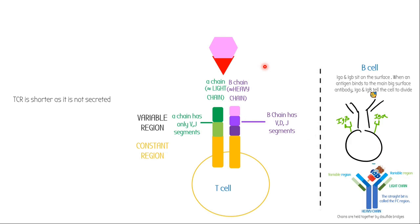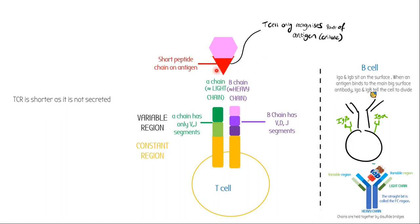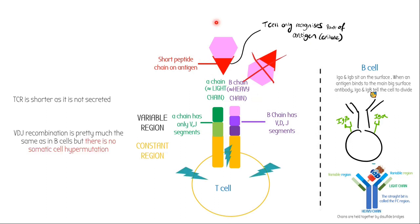Because the T-cell receptor is so specific, it won't recognize the whole antigen — it will only recognize short peptide sequences on the antigen, and those are known as epitopes. So for example, if a whole antigen comes along in a different configuration, the T-cell will not be able to recognize it; it can only recognize a specific portion of the antigen. In terms of VDJ recombination, the actual process is the same, and recombination inaccuracies occur in both B-cells and T-cells. However, there is no somatic hypermutation in T-cells, as opposed to B-cells.